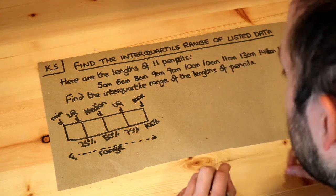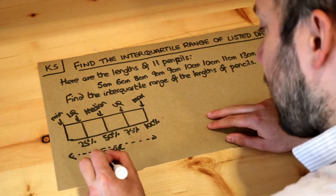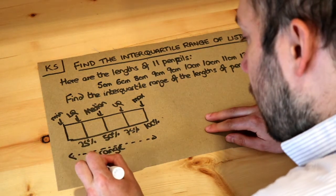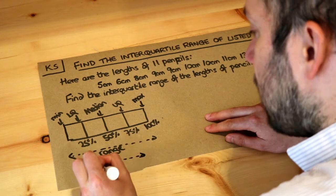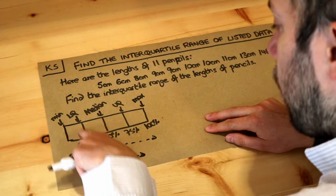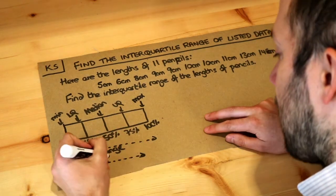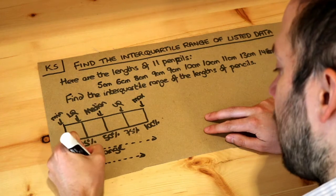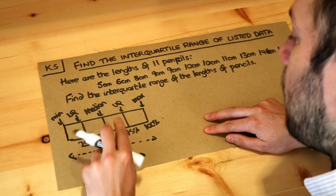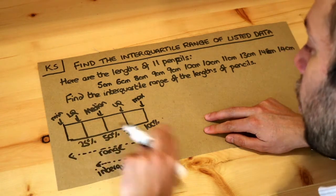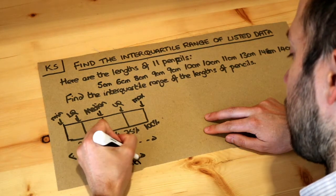The interquartile range is basically the range of the middle half of your data — between the lower quartile and the upper quartile, what that spread is. That's called the interquartile range: the range between the lower and upper quartiles. That's why it's called the interquartile range.